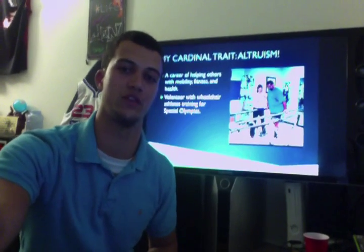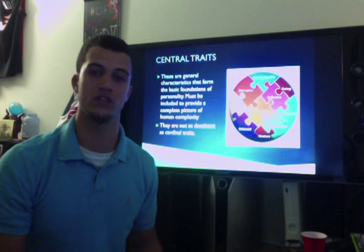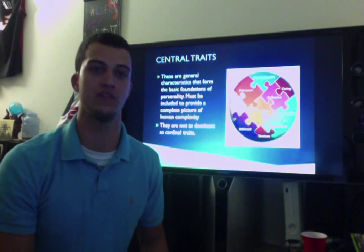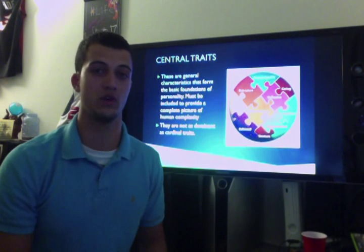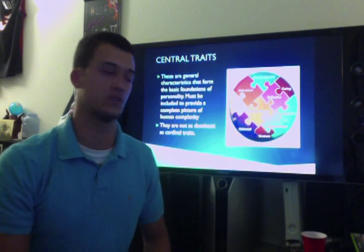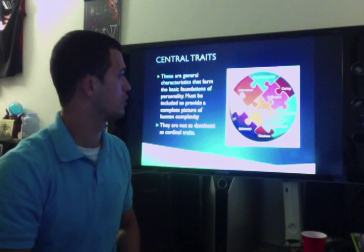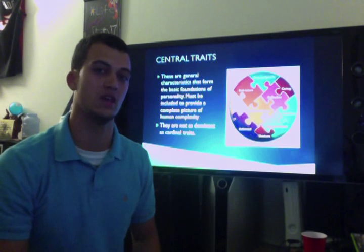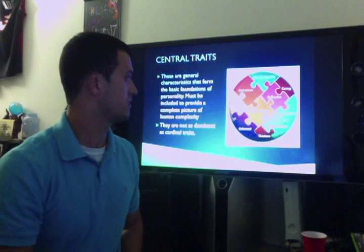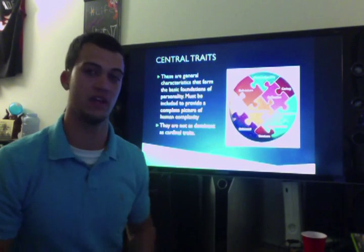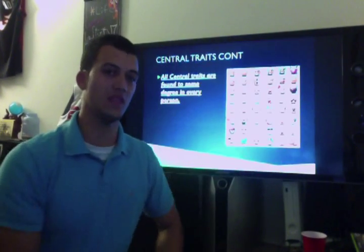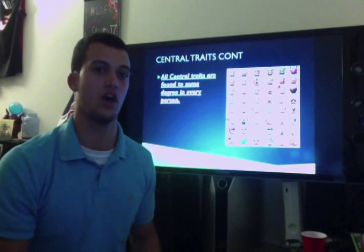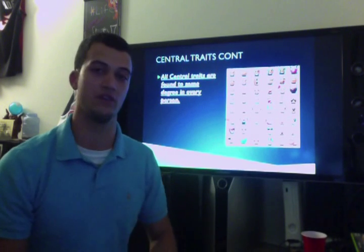Now the next part of Allport's theory were the central traits. Central traits are general characteristics that form the basic foundations of personality, and they must be included to provide a complete picture of human complexity. It's important to note that they are not as dominant as cardinal traits. Here I have a picture of a whole circle made of pieces of different traits. This is the typical layout for a personality in everyday people.